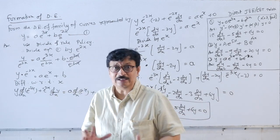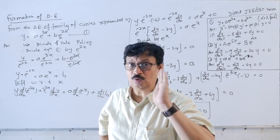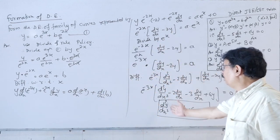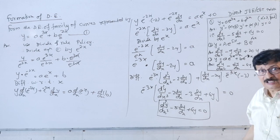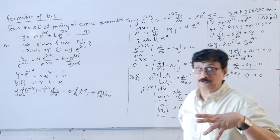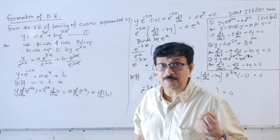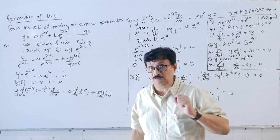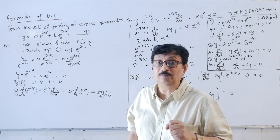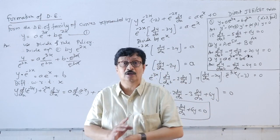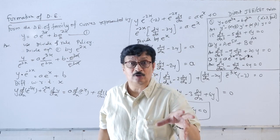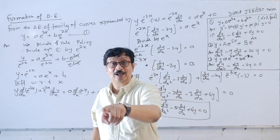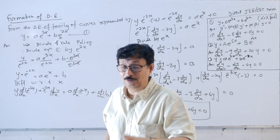Now in JEE and competitive exams, there is no chance you will solve by this long method — there has to be a shortcut. For the shortcut, recall the 10th standard quadratic equation: if alpha and beta are the roots, then the quadratic equation is x² − (alpha + beta)·x + alpha·beta = 0.